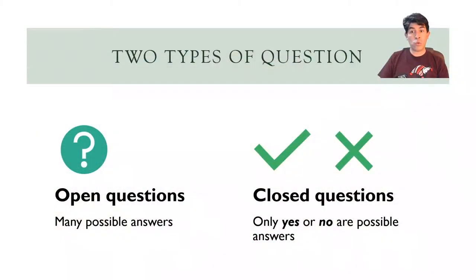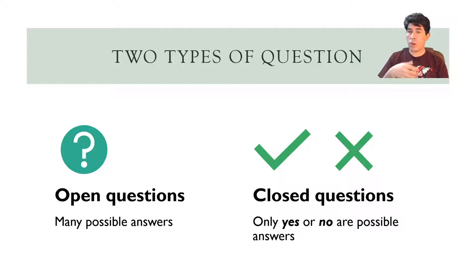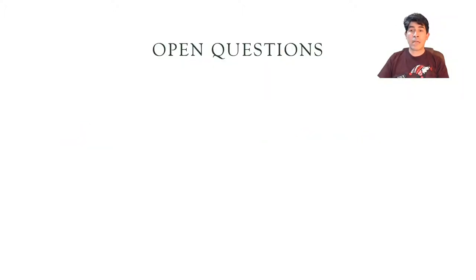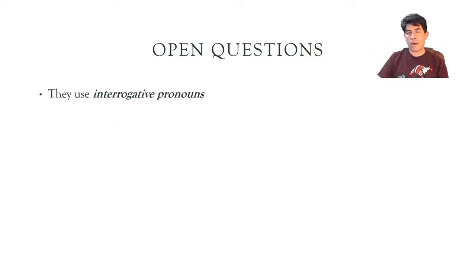In general, there are two types of questions. Open questions could have many possible answers, and then you have closed questions. Those closed questions can only be answered with yes or no. Those closed questions are then a synonym of yes-no questions.